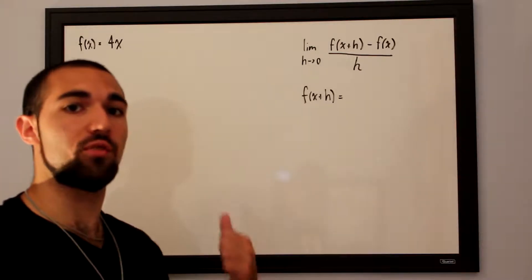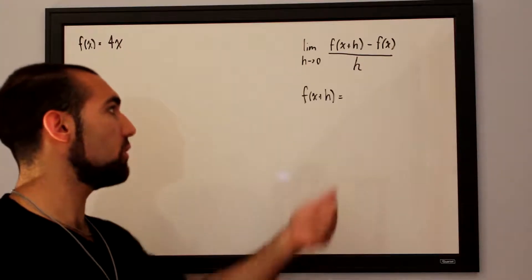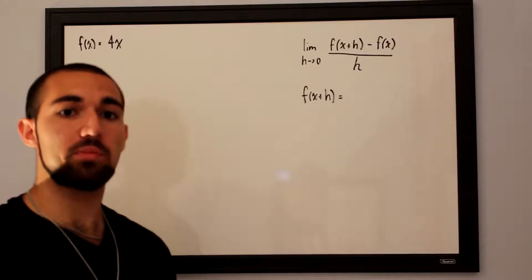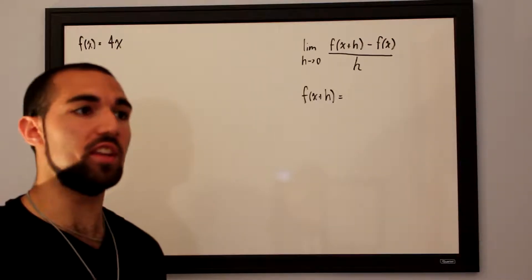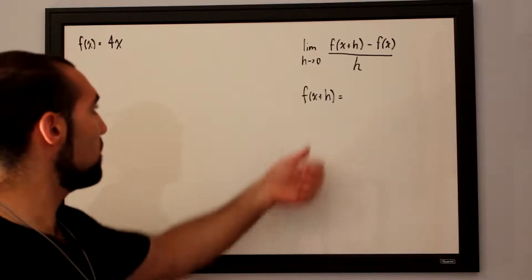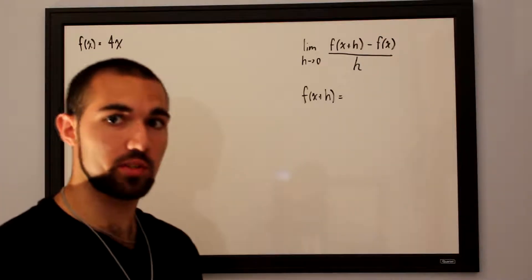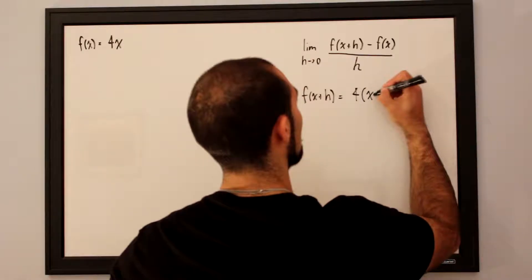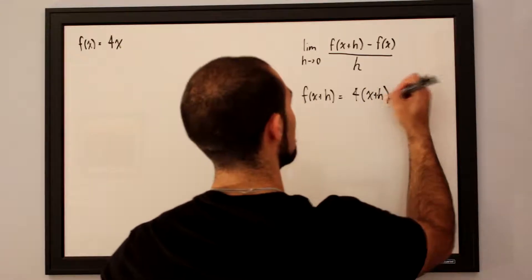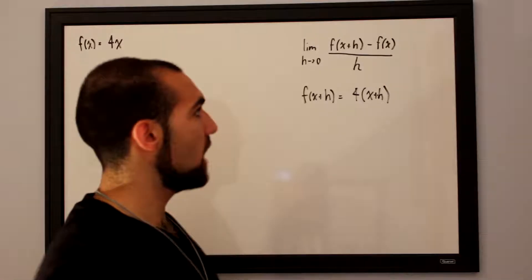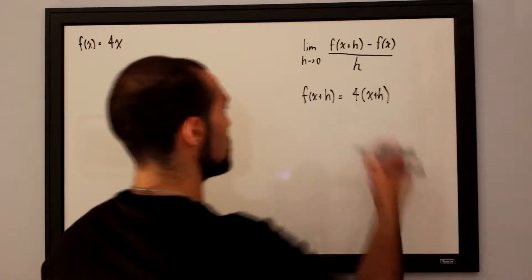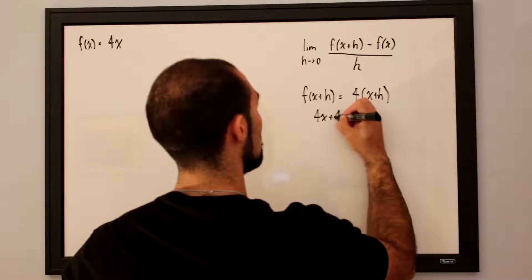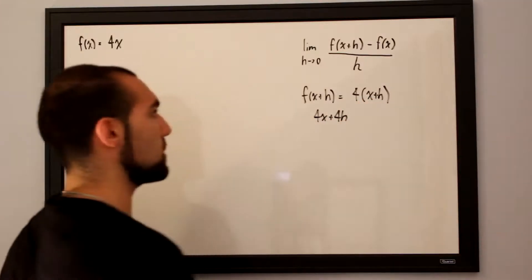Our f of x is 4x. To define f of x plus h, all we need to do is plug in x plus h wherever we see x in the initial function. So f of x plus h is 4 times open bracket x plus h. We distribute it, so it becomes 4x plus 4h, and that is our f of x plus h.